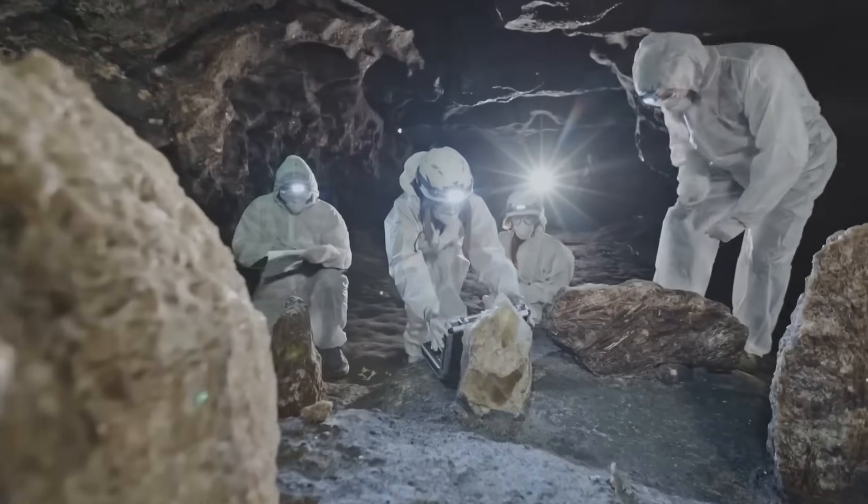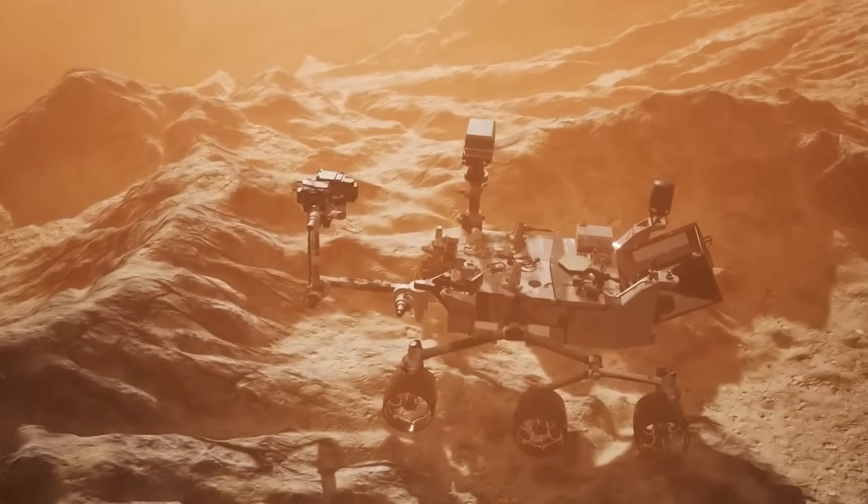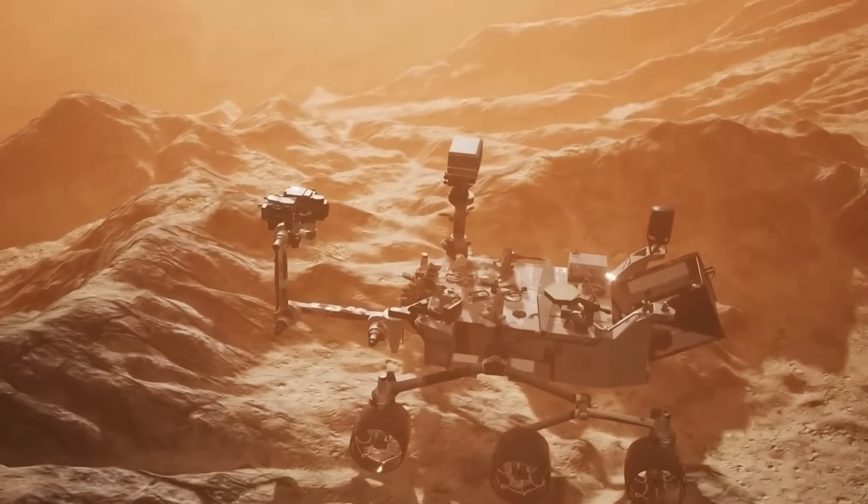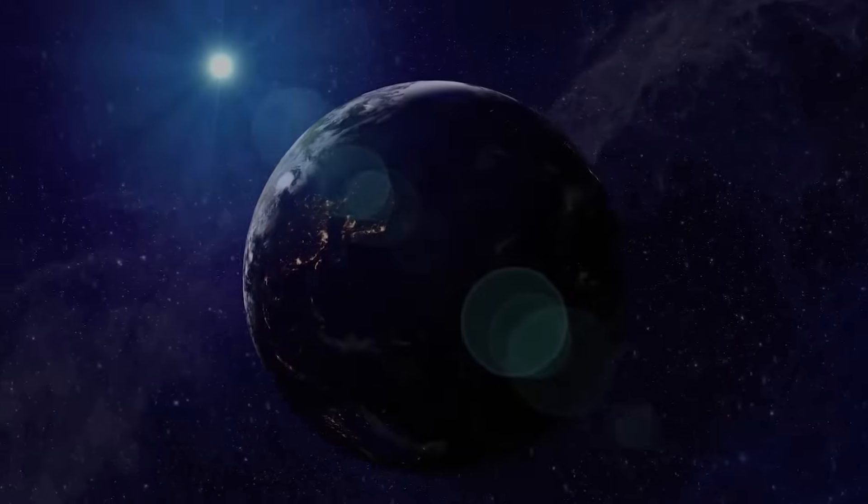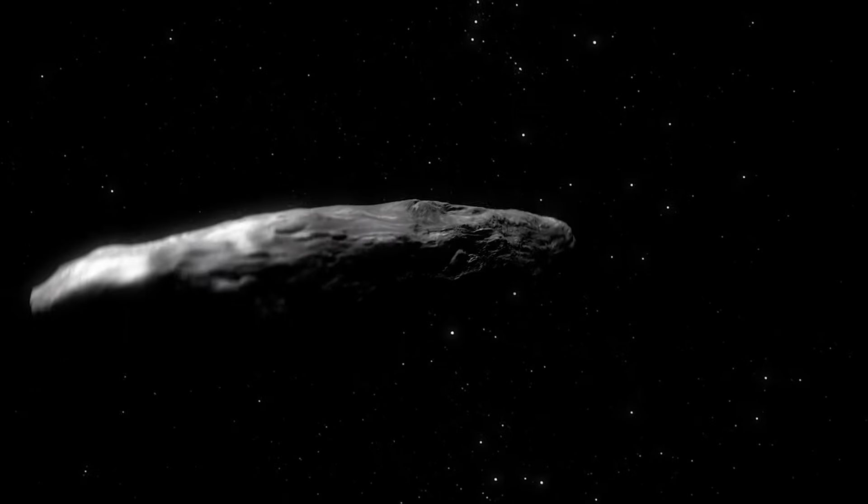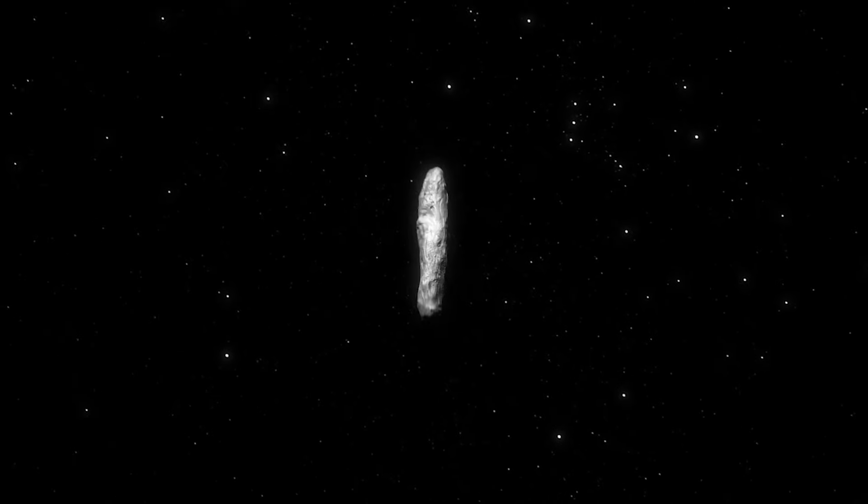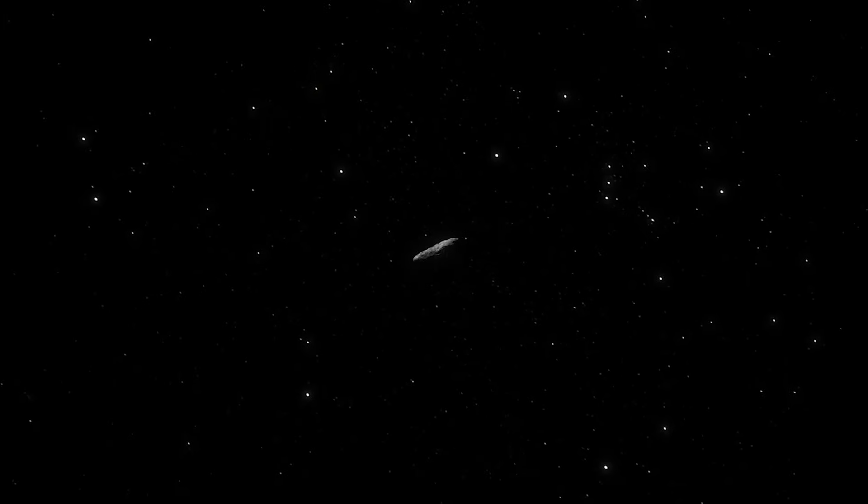Several celestial objects have been located in the vicinity of our solar system, but recently an unexpected visitor has made its appearance again. This visitor, named Oumuamua, entered our solar system from a location beyond the stars in 2017, and has sparked great interest among astronomers globally.